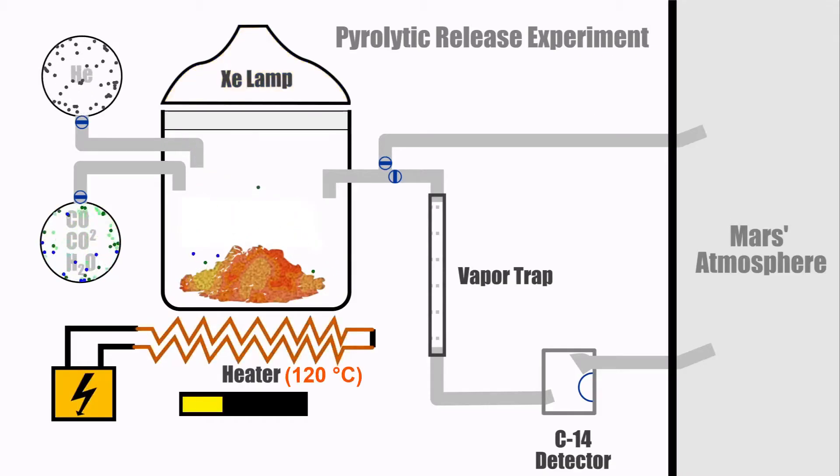The chamber is then heated to 120 degrees Celsius. This is done to release any unreacted carbon dioxide and carbon monoxide trapped in the soil. The air from the chamber is then flushed out into the Martian atmosphere and the sample soil is heated to 650 degrees Celsius for pyrolysis to occur in the soil.